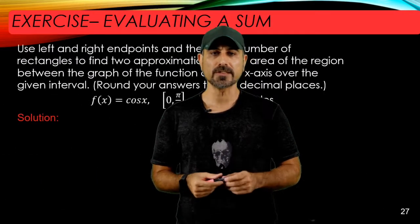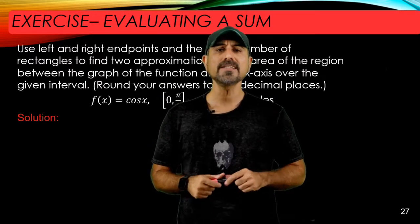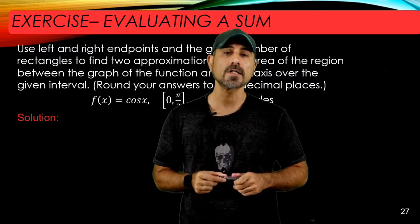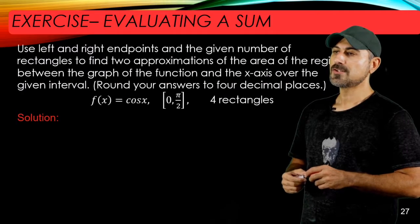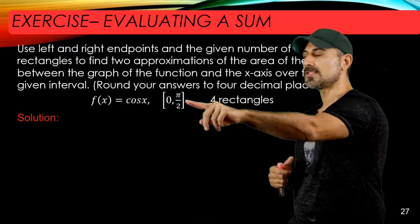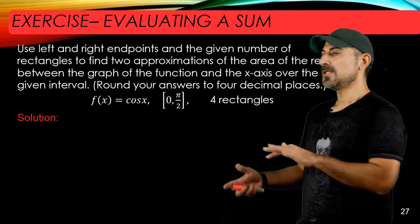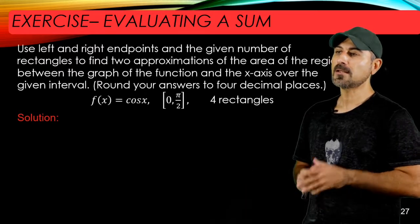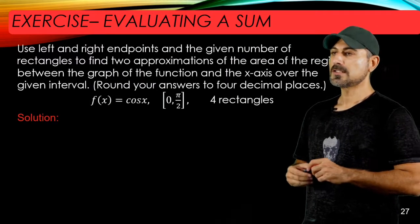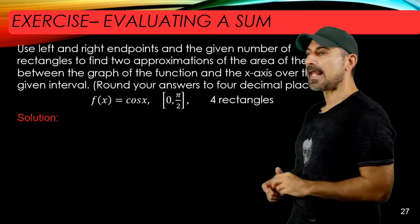Essentially, what we're going to do here is graph the function, graph the x-axis, graph the left and right vertical lines and determine the region, and then approximate the area of the region by using inscribed or subscribed rectangles. As you see in the statement of the question, we are asked to have only four rectangles. What that means is we're going to split this interval zero and pi over two into four pieces, and for each piece, we're going to choose one point — either the left endpoint or the right endpoint of those subintervals — and based on that, we're going to have inscribed or subscribed rectangles. The sum of the areas of those rectangles is going to be the approximation of the area between the curve, the x-axis, x equals zero, and x equals pi over two.